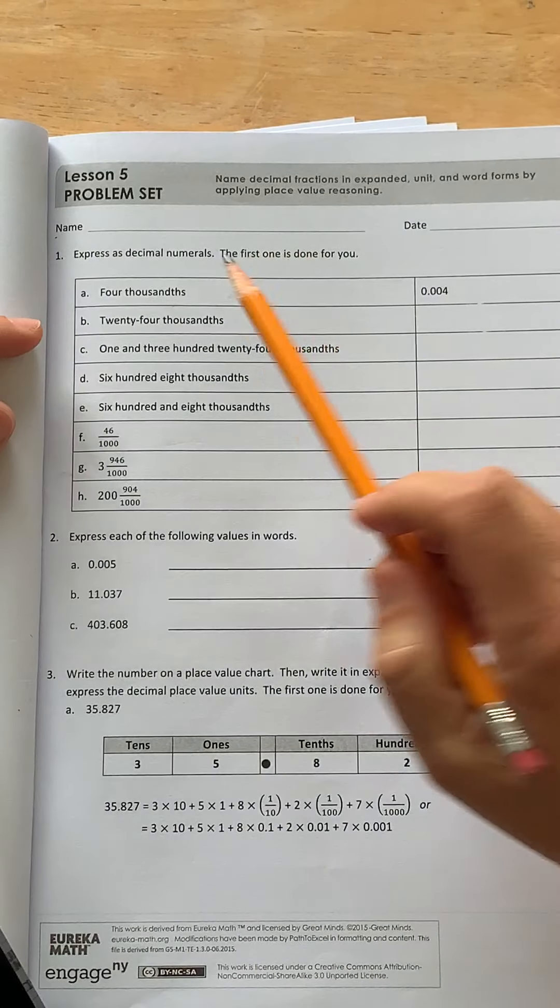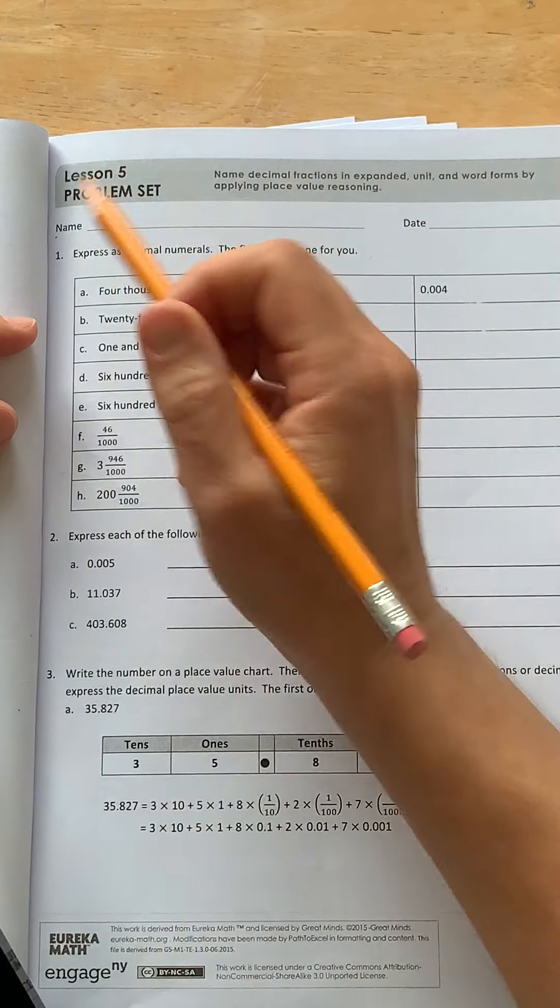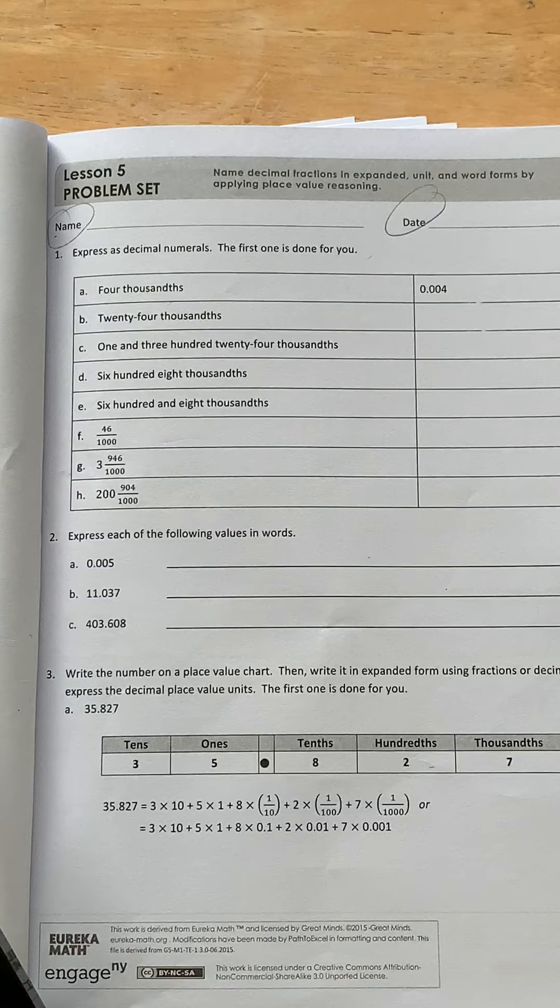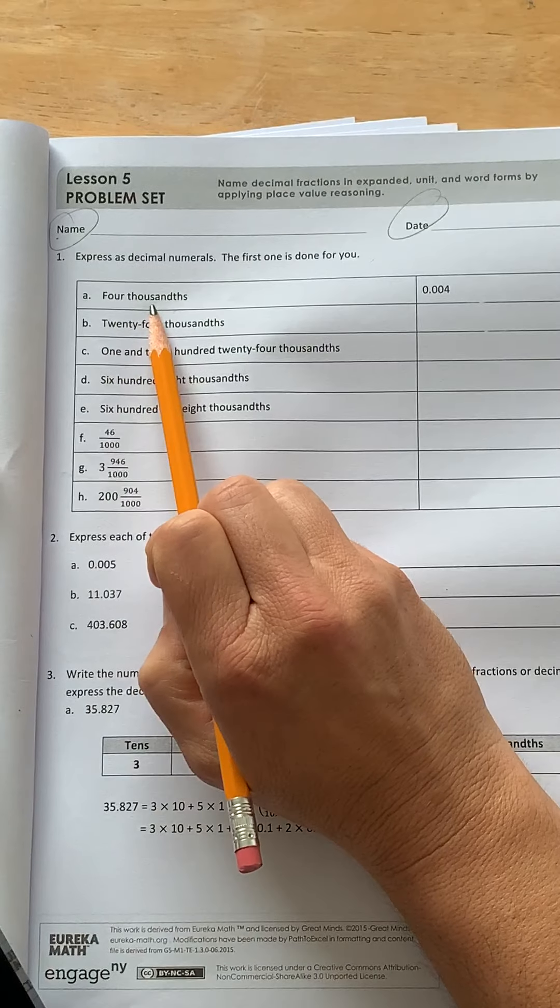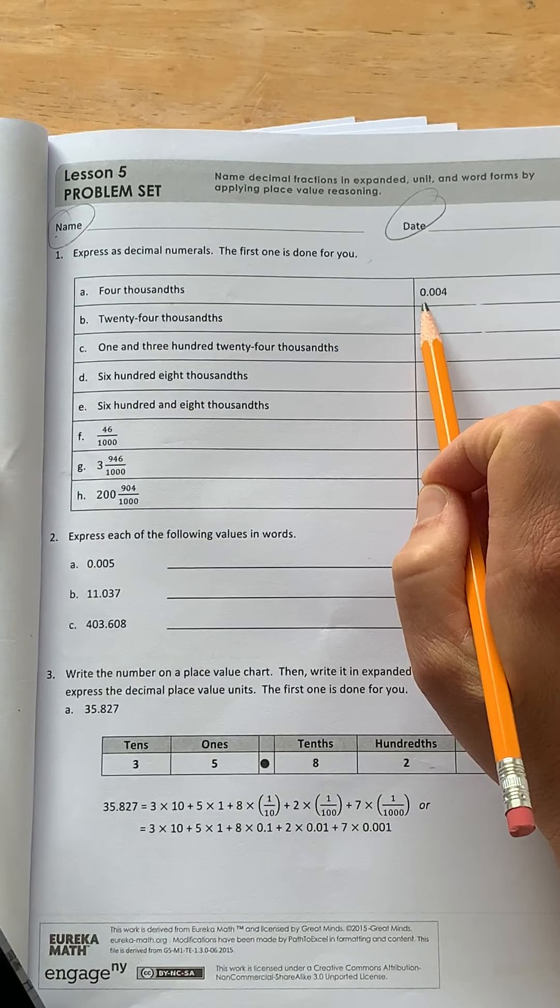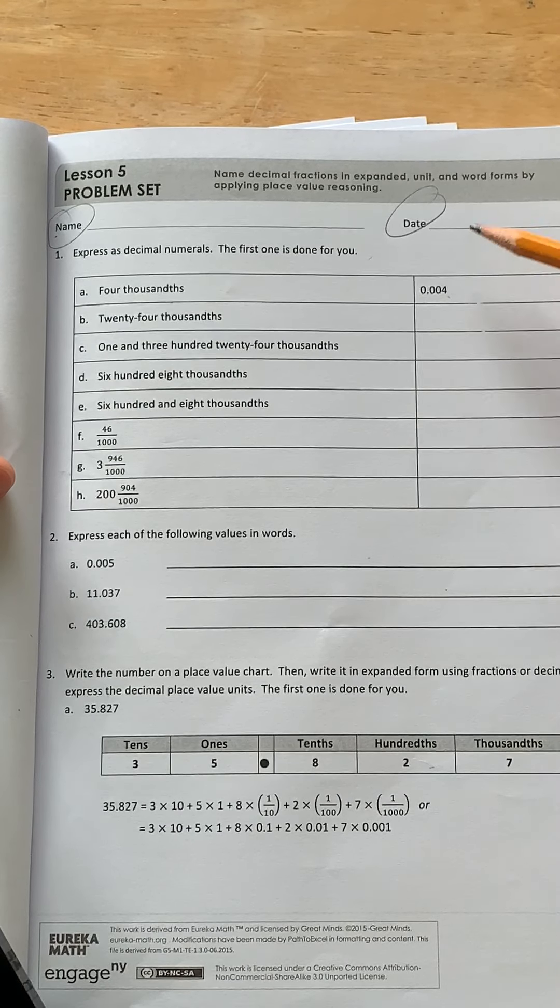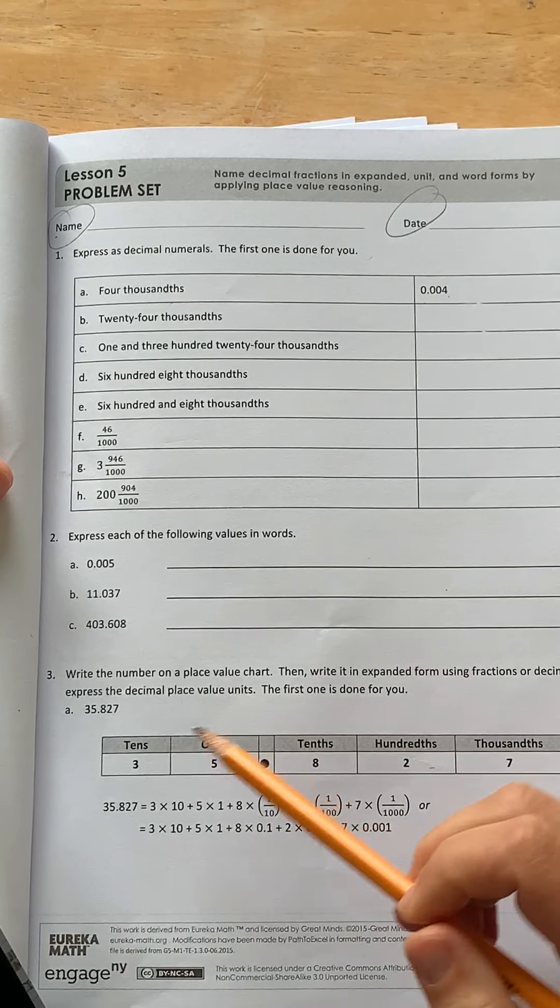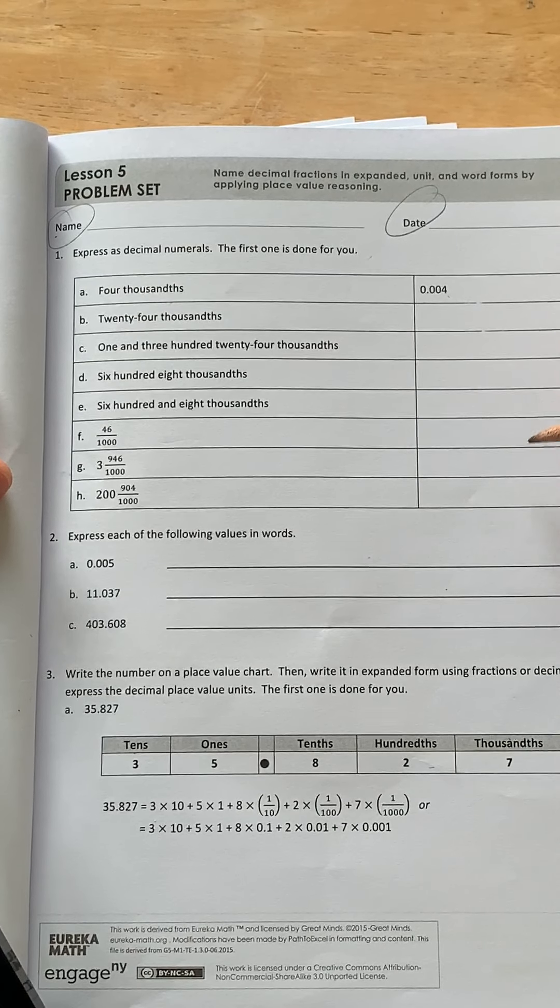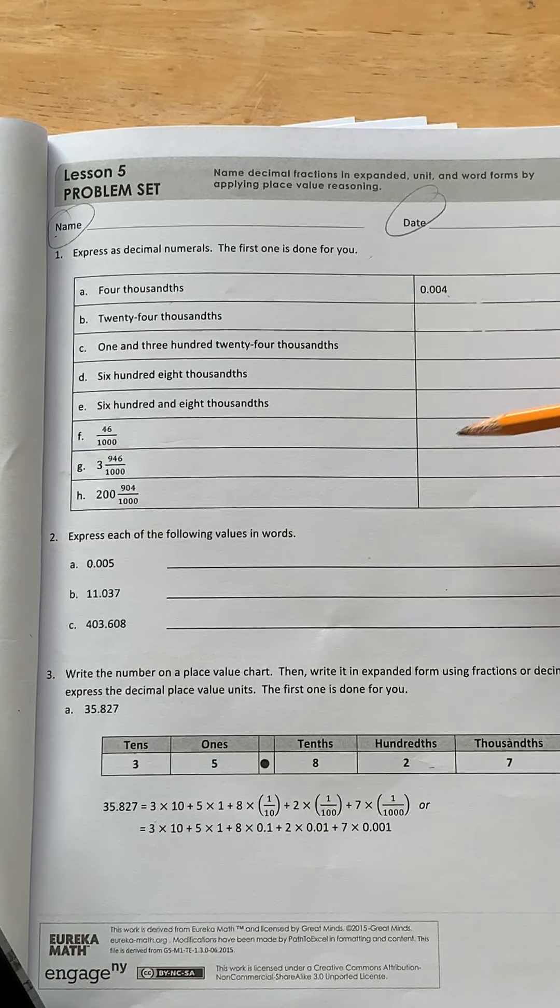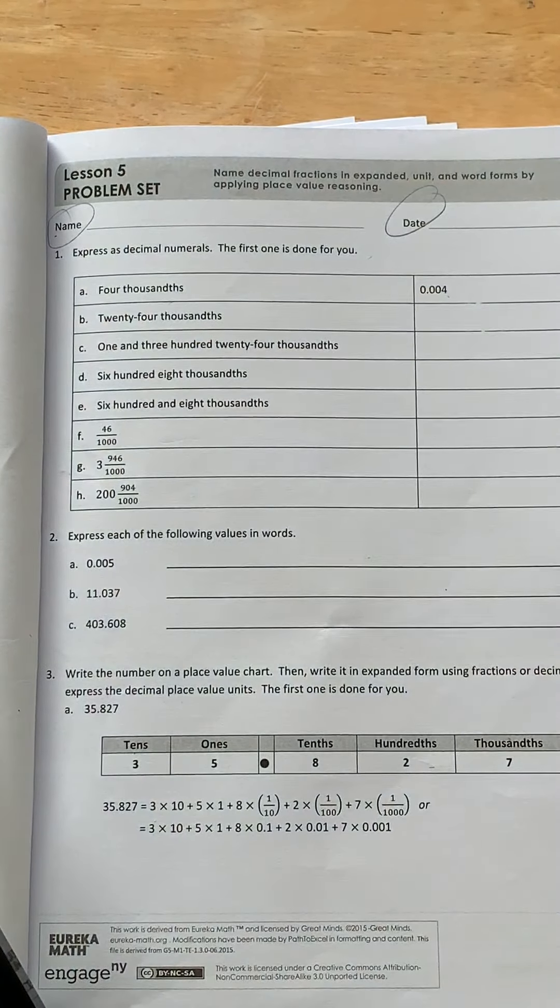The first direction say express as decimal numerals. The first one is done for you. Take a moment to put your name and date. So as you can see, these are written in word form, four thousandths. And all you have to do is write it as a decimal. You may want to use this part below to remind you the tens, ones, tenths, hundredths, and thousandths. That will help you do this part. So go ahead and pause the video right now. And I would like you to do B to H. And then we'll go over them.